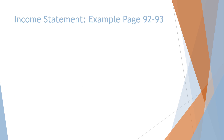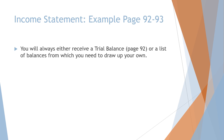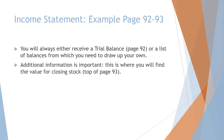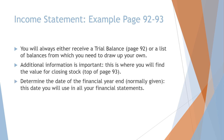We will now look at an example of the income statement — go to page 92 in your textbook. Take note of the following: you will always receive a trial balance or a list of balances from which you need to draw up your own trial balance. Additional information is always important; this is where you will find the value for closing stock, like at the top of page 93. Determine the date of the financial year end — this date will be used in your financial statements headings.